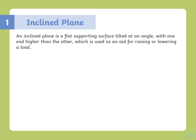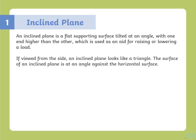The first simple machine is the inclined plane. An inclined plane is a flat supporting surface tilted at an angle, with one end higher than the other, used as an aid for raising or lowering a load. If viewed from the side, an inclined plane looks like a triangle. Its surface is at an angle against the horizontal surface.